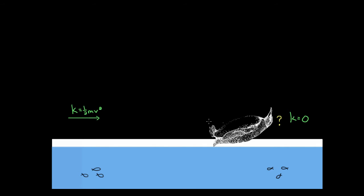Now if you would have asked this question when we dealt with forces, you would have said, well obviously, this penguin is coming to a stop because there must be some amount of friction between the penguin and the ice. Maybe the ice is very slippery, but it can't be frictionless, or this penguin would probably keep sliding forever. There might be some air resistance causing the penguin to slow down, but it's probably mostly friction between the penguin and the ice.